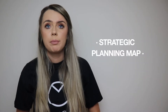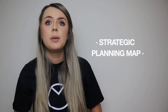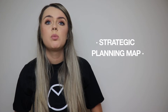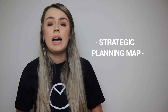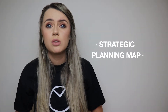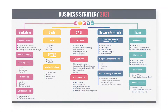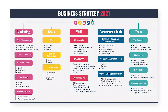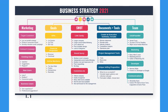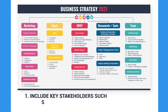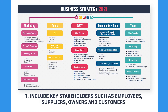Strategic planning map: strategic planning needs to be more than a list of actions and goals. You need to outline an established step-by-step process your team can follow to meet their goals. Step one: include key stakeholders such as employees, suppliers, and owners.